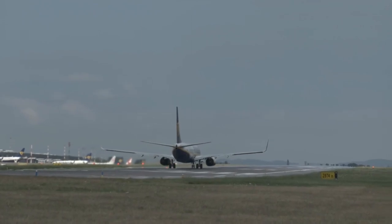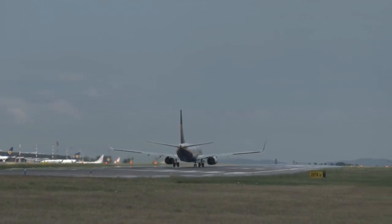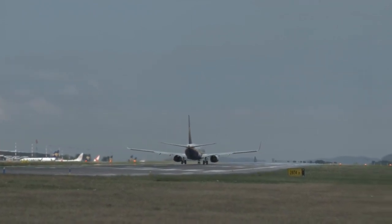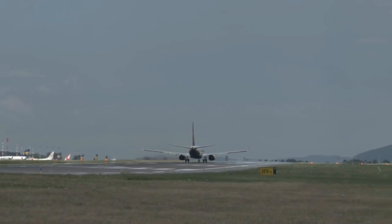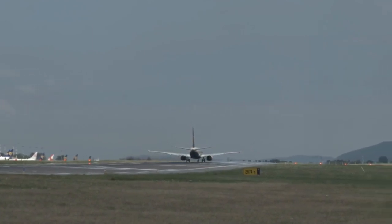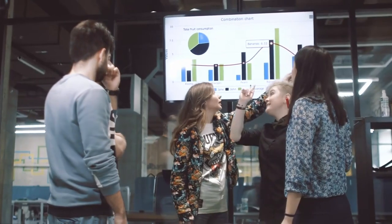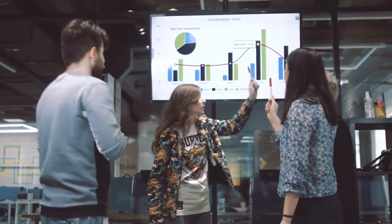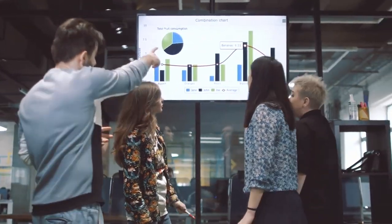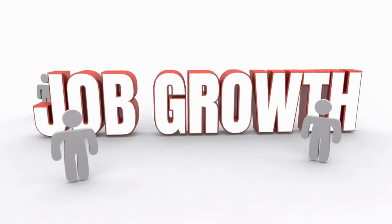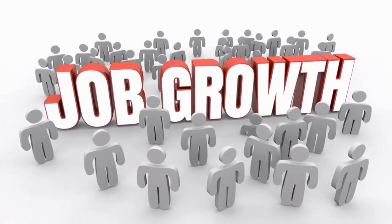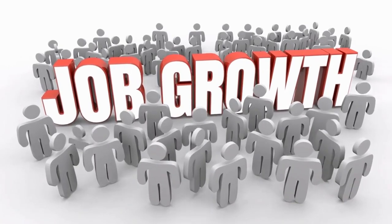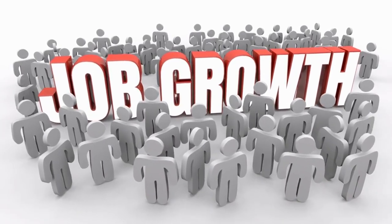The mass production method of the Ford Model T reduced production costs, making the vehicle more affordable and accessible to a larger number of people. This resulted in the growth of the automotive industry and increased job opportunities. Automobile production and sales provided employment for thousands of people and revitalized various sectors, including the production of automobile parts.